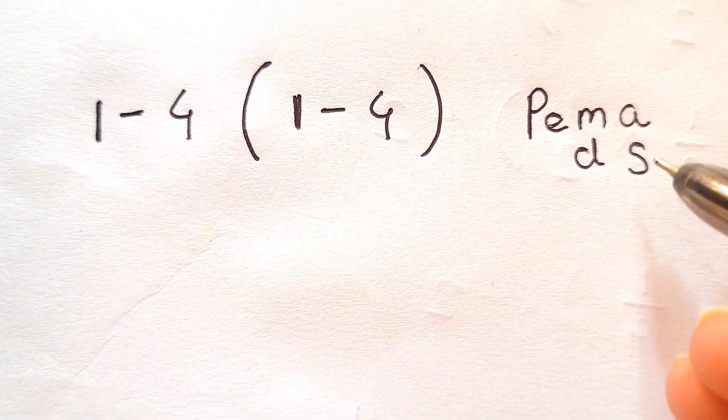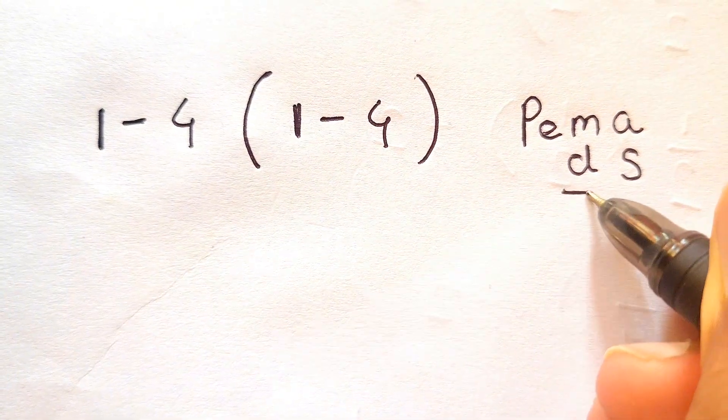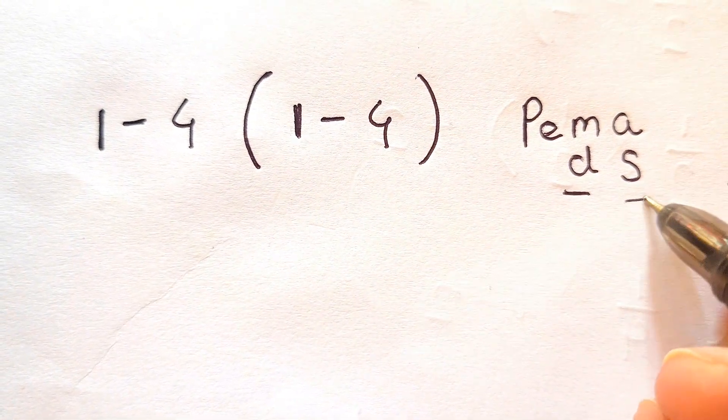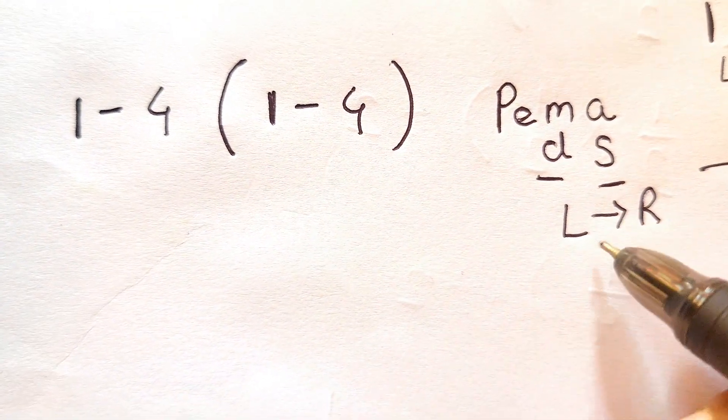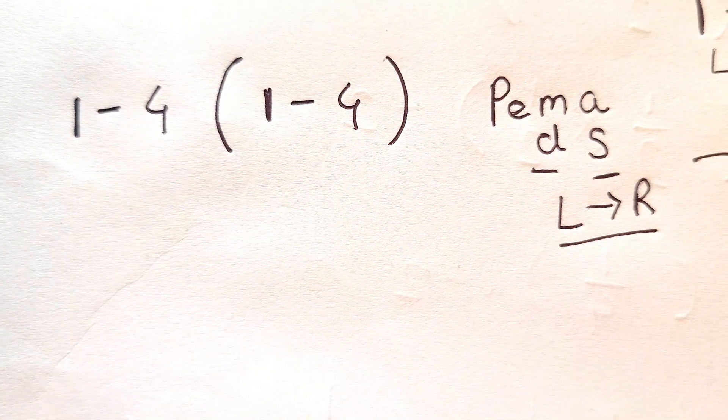PEMDAS: parenthesis, exponents, multiplication, division, addition, and subtraction. In this, the priority of multiplication and division is the same, and addition and subtraction is the same, but we need to go from left to right. Whichever comes first, we need to solve it.